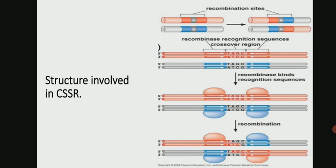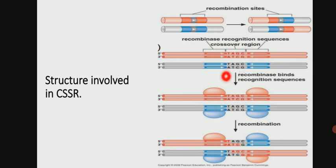Looking at the overview of how these recombinase enzymes work: there are two DNA duplexes at which recombination is going to occur, and each of the recombination sites is organized as a pair of recombinase recognition sequences positioned symmetrically. The recognition sequences flank a central short asymmetric sequence known as the crossover region, where DNA cleavage and rejoining occurs. The subunits of the recombinase bind these recognition sites and recombination occurs.